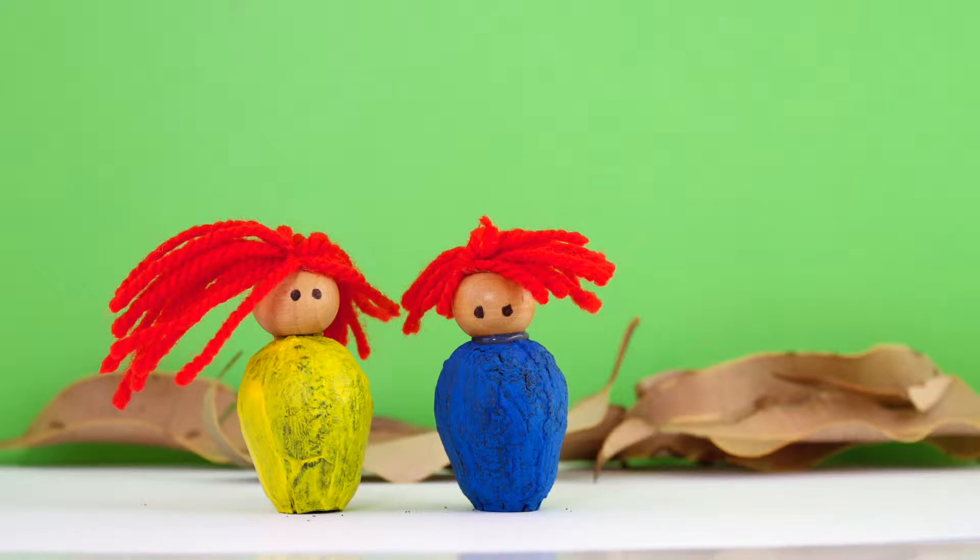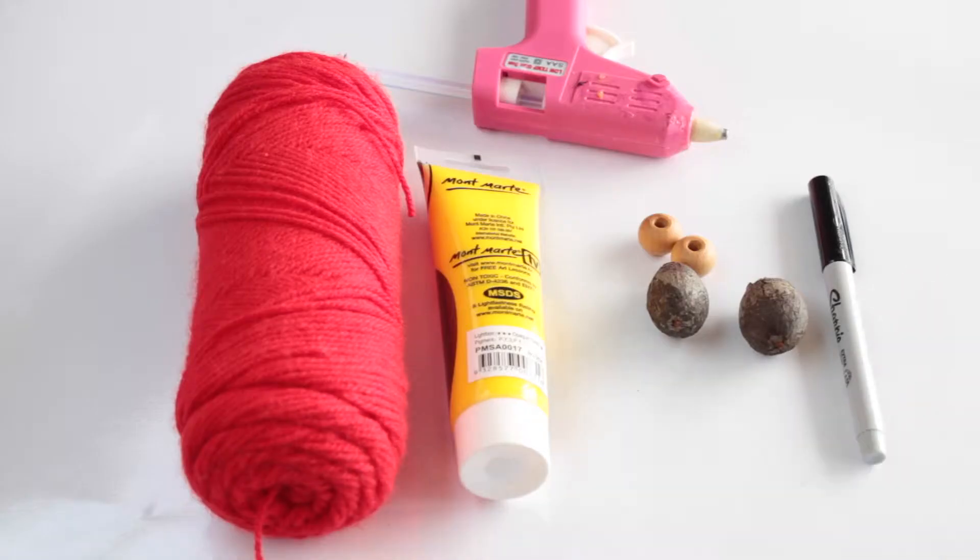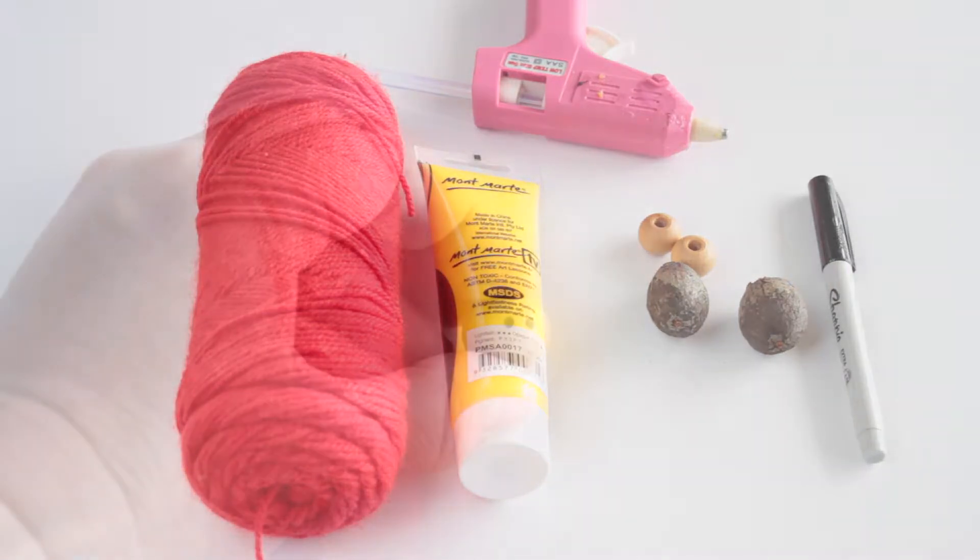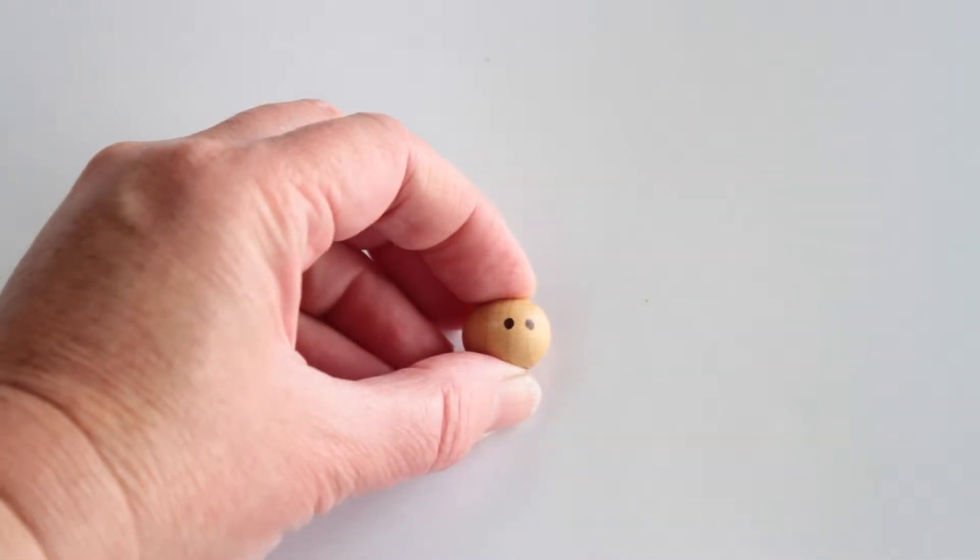In this video we're going to make gum nut dolls. What you need: wool, acrylic paint, glue gun, black felt pen, two wooden beads and two gum nuts. Draw eyes on the wooden beads using a black felt pen.